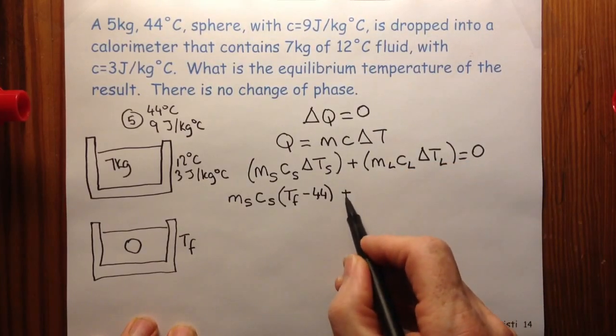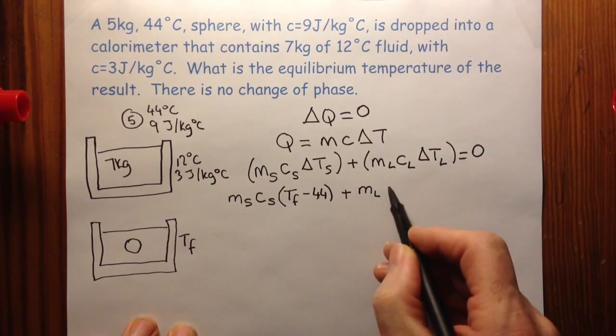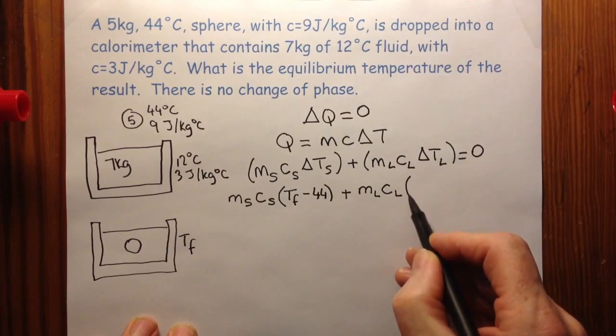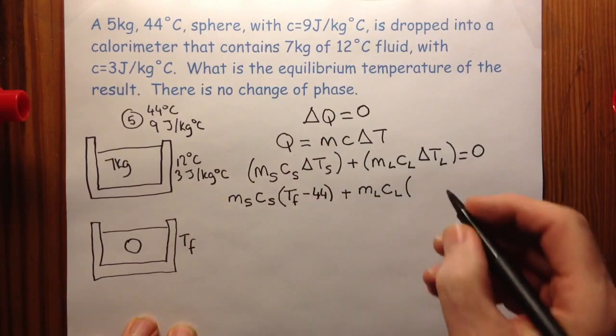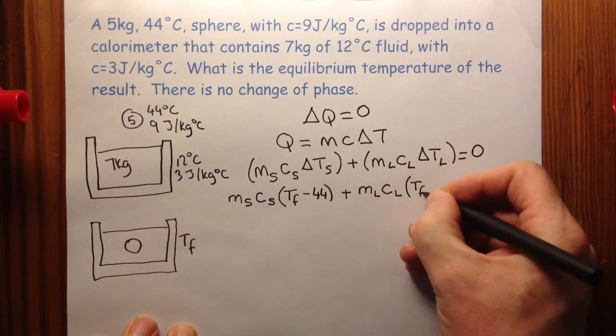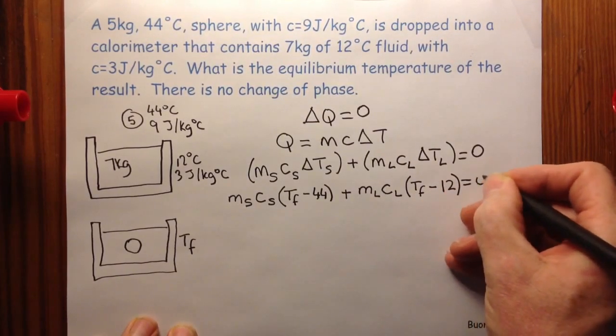And then for my second term, I have the mass of the liquid times the specific heat of the liquid. And then if I want to expand my temperature change for my liquid, it starts off at a cold temperature and it goes to a final temperature. So again, I'd say the final minus the initial is equal to zero.